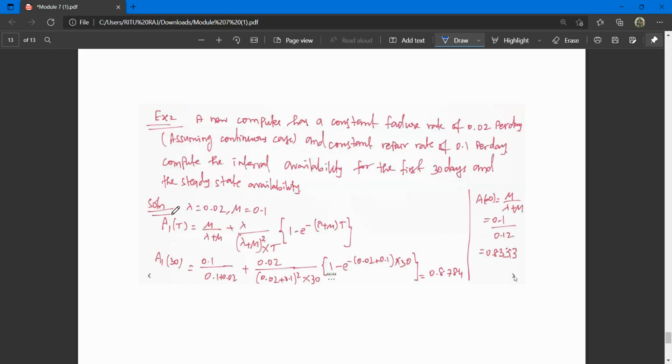Lambda is 0.02, the failure rate. Nu is 0.1, the repair rate. The interval availability formula is given. What is t? T is 30 because we have been given the first 30 days.